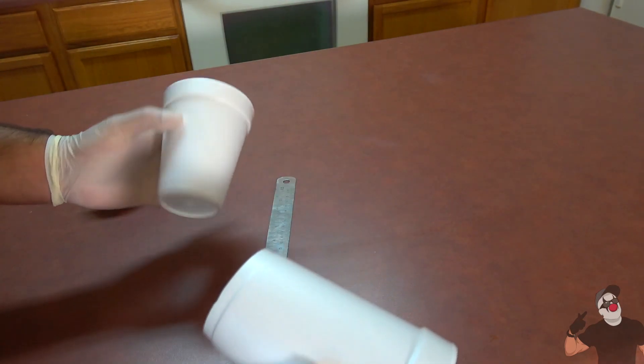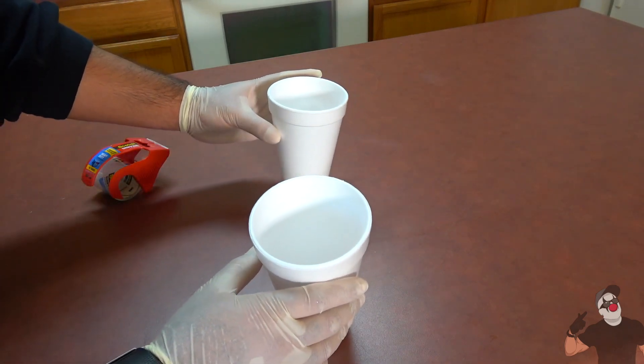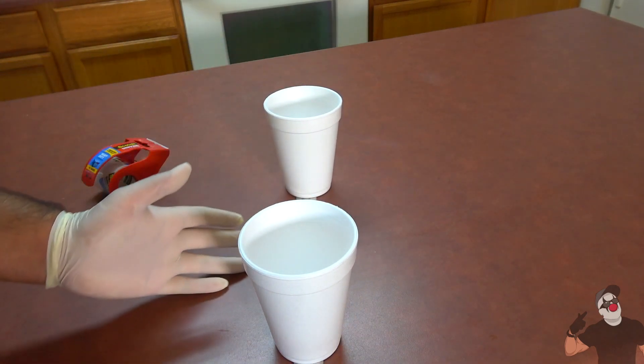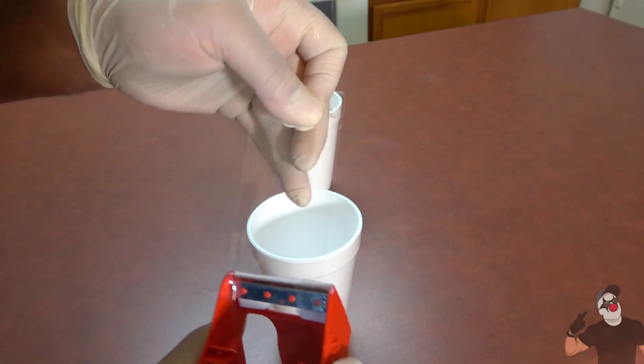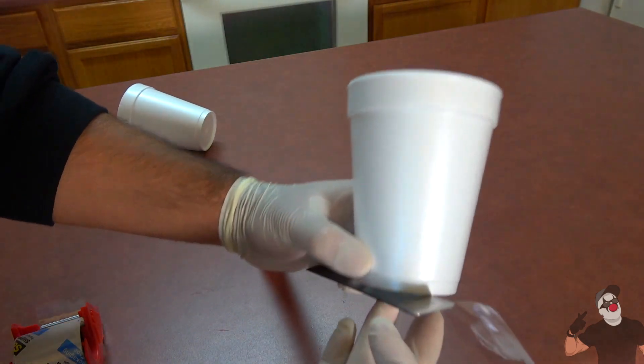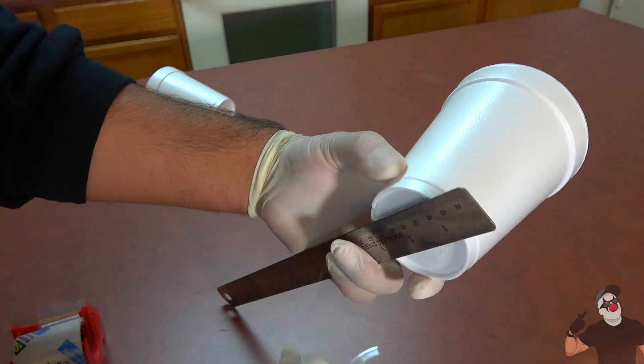What we're going to do is we're going to take both cups and tape them onto the ruler, one on each end. So just take some tape and attach the cup to the ruler, like so.